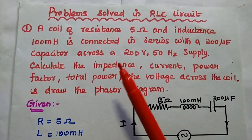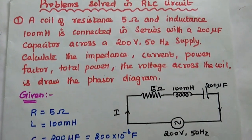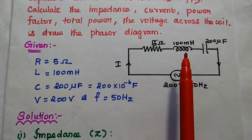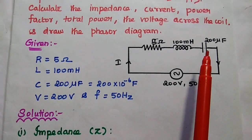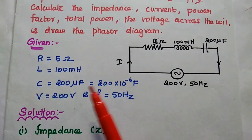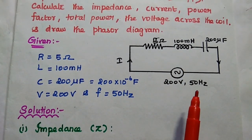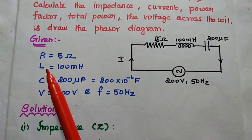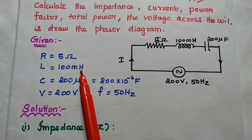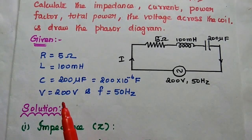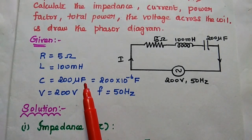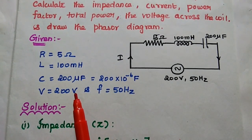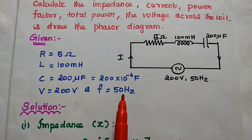Here the series RLC circuit is given, so first we have to write the given data. A coil of resistance 5 ohm and inductance 100 mH is connected in series with capacitor 200 microfarad, across the voltage 200 volt with 50 hertz. So the resistance value is 5 ohm, inductance value is 100 mH — milli means 10 to the power minus 3. Capacitor C is equal to 200 microfarad — micro means 10 to the power minus 6. Voltage is equal to 200 volt and frequency is equal to 50 hertz.